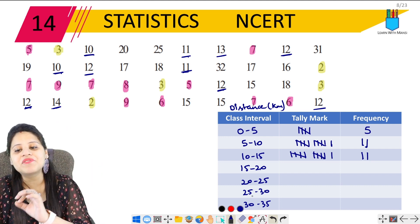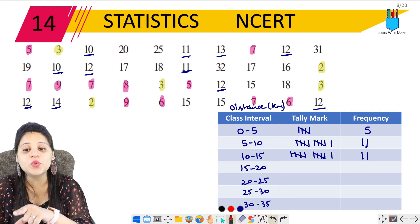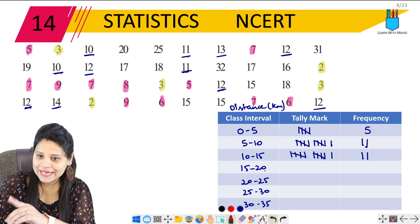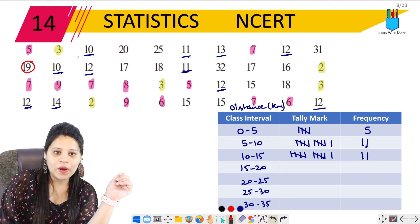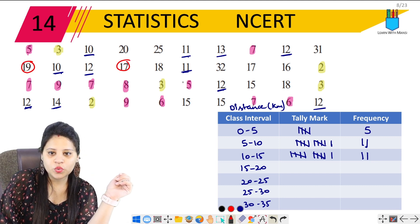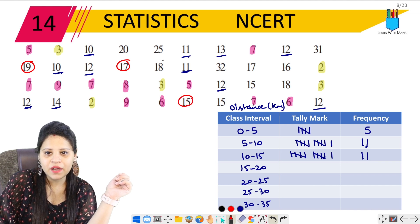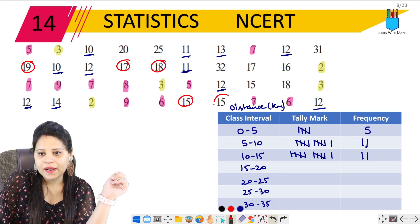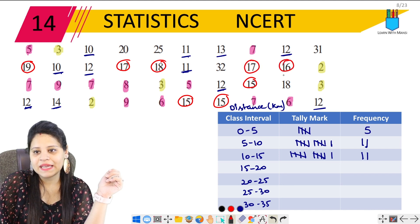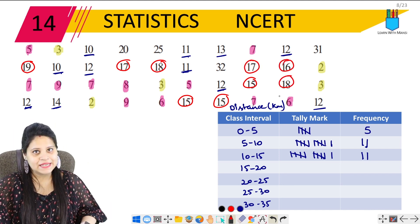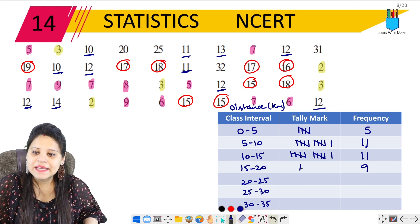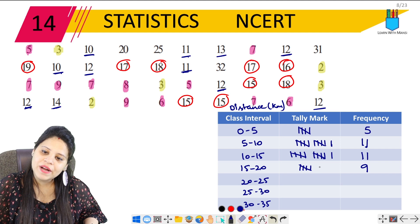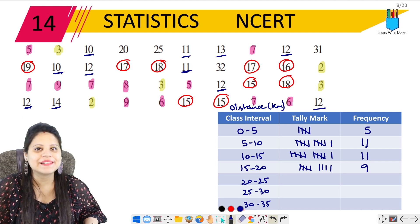Next, 15 to 20 — 20 is not included, so we go up to 19. Counting through: 1, 2, 3, 4, 5, 6, 7, 8, 9. So the frequency for 15 to 20 is 9.